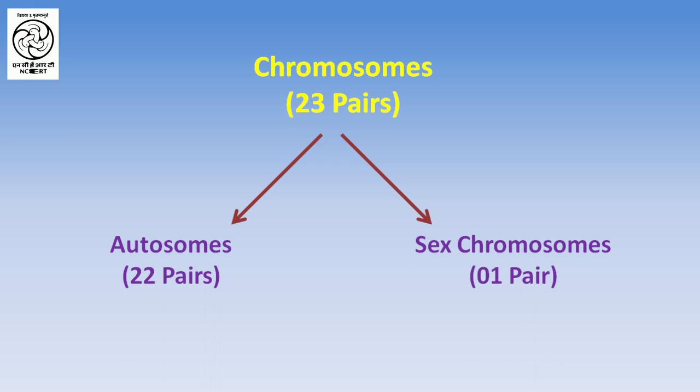Let us study about different types of chromosomes in humans. There are a total of 23 pairs of chromosomes in the human body, out of which 22 pairs are called autosomes and the remaining one is the sex chromosome. Ma'am, is there any difference between sex chromosomes and autosomes? Autosomes determine the body characteristics of an individual, whereas sex chromosomes determine whether a person would be male or female.